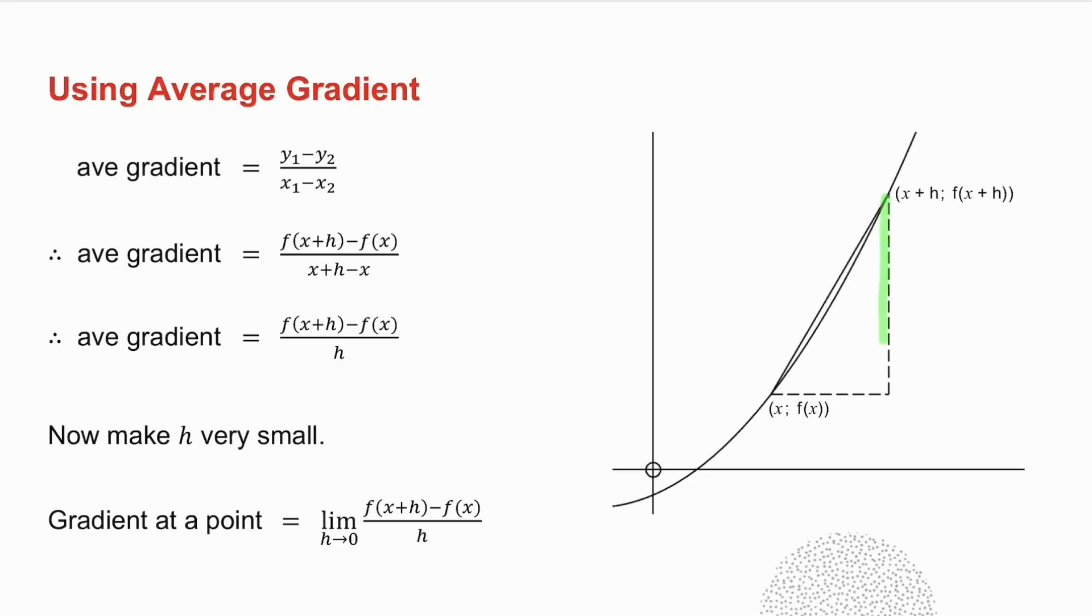Well, the length of this line is y₁ minus y₂. The length of this line is x₁ minus x₂. So the average gradient between those two points is there.